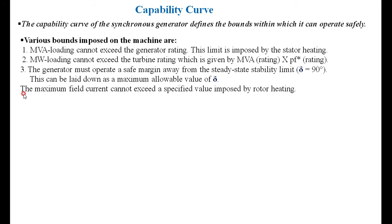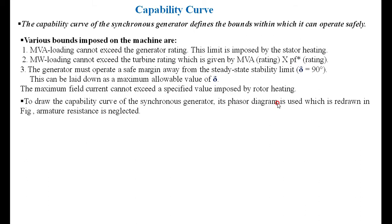The fourth limitation is that the maximum field current cannot exceed a specified value imposed by the rotor rating. That is, you should not exceed the field current beyond its rated value as specified on the machine. To draw the capability curve of a synchronous generator, first we have to construct the phasor diagram of the alternator, and then derive the capability curves from it.